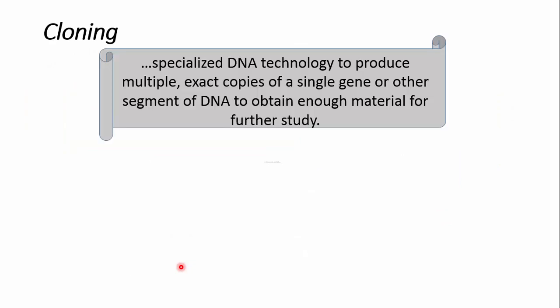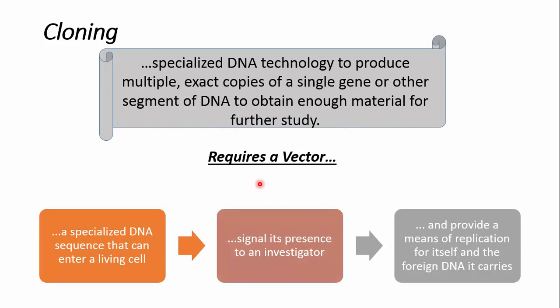Next, we perform cloning, in which we produce multiple but exact copies of our single gene or other DNA segment that we want to obtain in high number. Vectors must have specialized DNA sequences that allow them to enter the living cell, selectable markers that indicate their presence to an investigator, and an origin of replication so they can easily replicate inside the host cell.